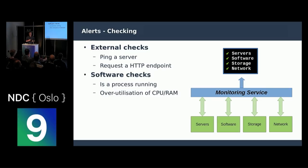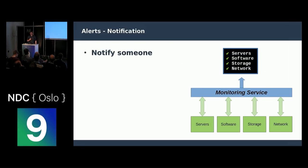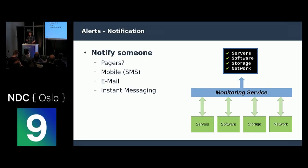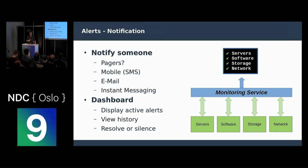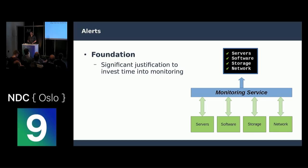We can check specific things about software, like is a process running, is a process using too much memory. Or we can be looking at hardware — are temperatures too high, is something going to overheat, which disks have failed and need replacing, are there any network ports that might indicate faulty cables. And we notify someone — mobile phones, email, instant messaging — and we can display all these things that are broken in a nice fancy dashboard. This is the foundation. A lot of the justification to spend time doing this is to make sure that things keep working and that you get told about things that are broken.